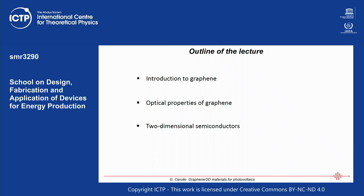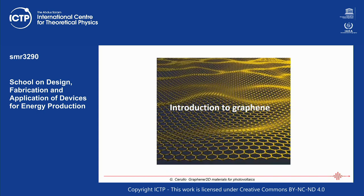Two-dimensional semiconductors are materials that can be exfoliated to atomically thin form but are semiconductors, differently from graphene which is a semi-metal. Then I'm going to show how one can start from these atomically thin two-dimensional materials and stack them on top of each other to form heterostructures, essentially fabricating new materials by stacking atomic layer by atomic layer — giving great freedom in engineering new material properties.